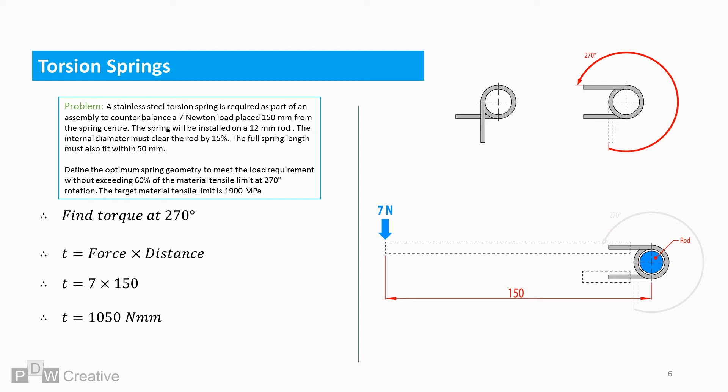The torque is found by taking the force and multiplying by the distance from the centre of the rod or pivot. Here, our torque is 1050 Nmm.